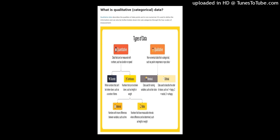The scales of measurement define how variables are defined and categorized. Psychologist Stanley Stevens developed the four common scales of measurement: nominal, ordinal, interval, and ratio. Each scale has properties that determine how to properly analyze the data — the properties evaluated are identity, magnitude, equal intervals, and a minimum value of zero.